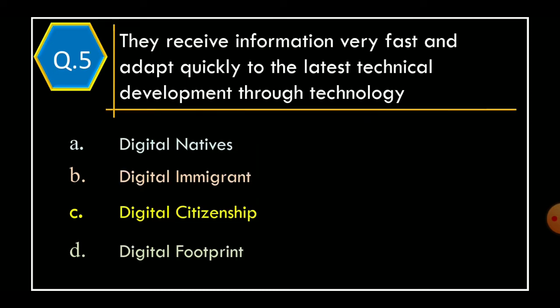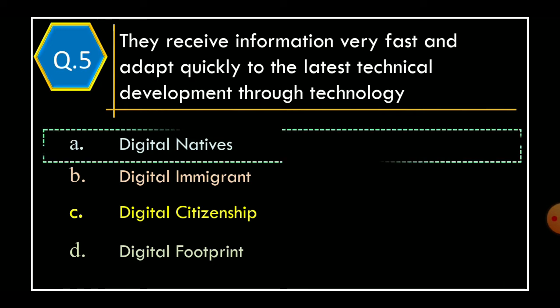Question 5: They receive information very fast and adapt quickly to the latest technological developments through technology — this is called? Option A: Digital natives. Option B: Digital immigrant. Option C: Digital citizenship. Option D: Digital footprint. The correct option is Option A: Digital natives.